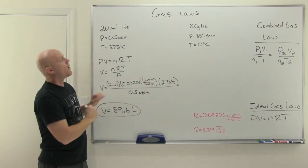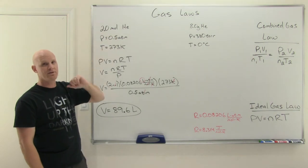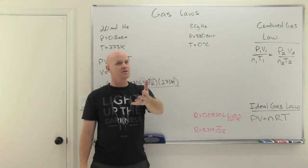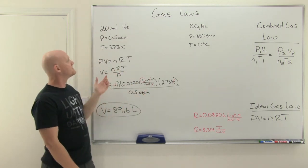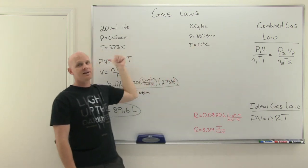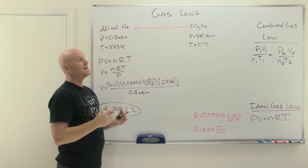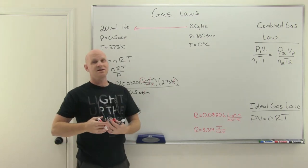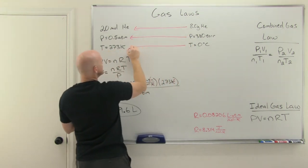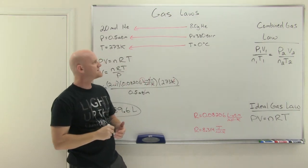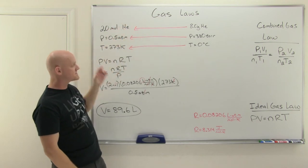We can definitely make this harder by not giving the data in convenient units. Instead of moles, I could give you grams — you'd have to convert. I could give pressure in torr instead of atmospheres — you'd convert. I could give temperature in Celsius instead of Kelvin — you'd convert. For example: eight grams of helium with molar mass of four grams per mole gives two moles; 380 torr equals 0.5 atmospheres; and zero degrees Celsius is 273 Kelvin. So to make ideal gas calculations harder, they just provide the data in less convenient units and you do conversions before plugging in.